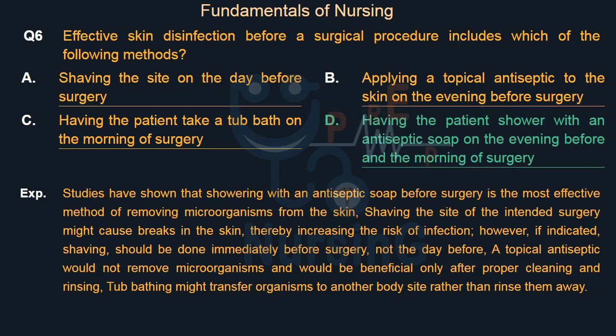Studies have shown that showering with an antiseptic soap before surgery is the most effective method of removing microorganisms from the skin. Shaving the site might cause breaks in the skin, increasing the risk of infection; if indicated, shaving should be done immediately before surgery, not the day before. A topical antiseptic would not remove microorganisms, and tub bathing might transfer organisms to another body site.